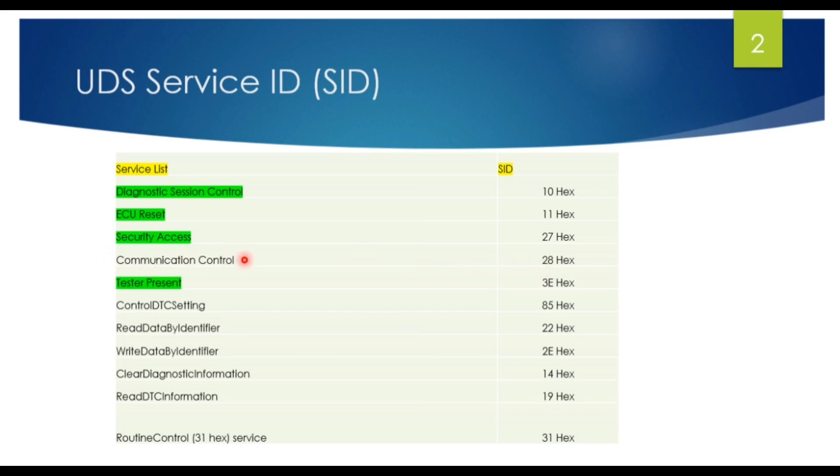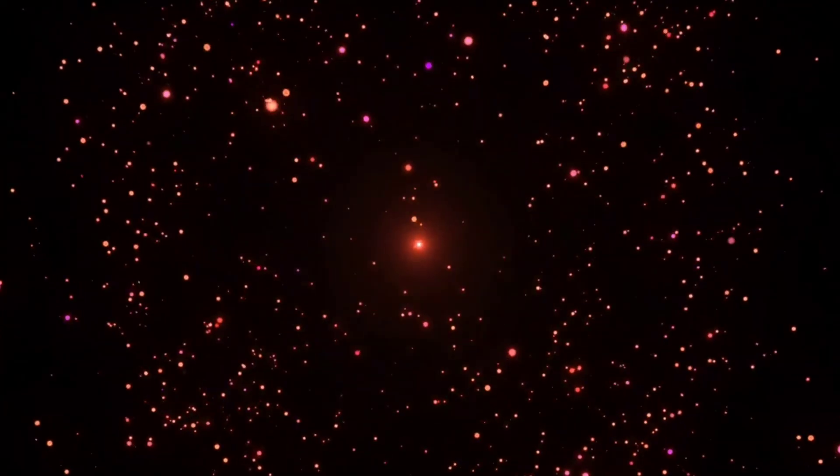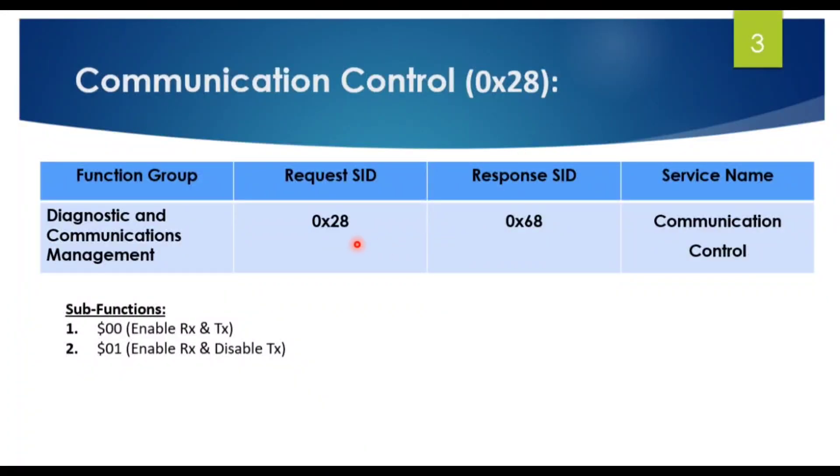In this communication control video, I will talk about what is communication control service ID and why do we use this communication control. So let's get started. Communication control request ID is 0x28 and response is 0x68, and it has two sub-functions: 0x00 and 0x01.